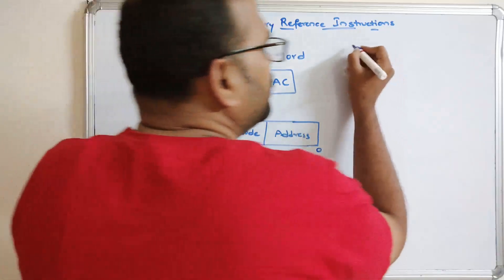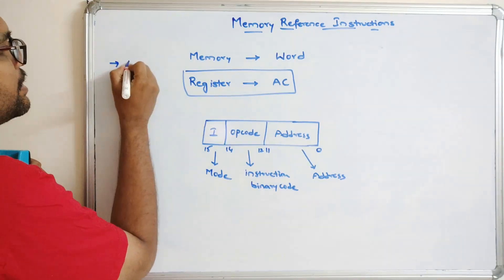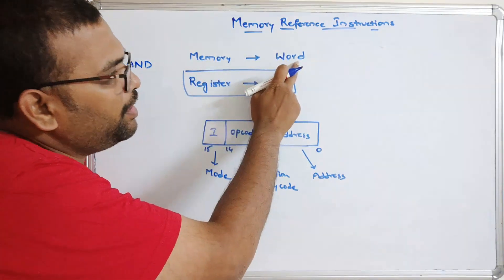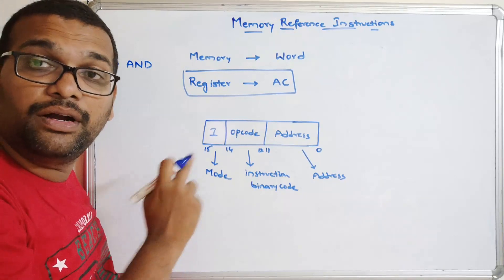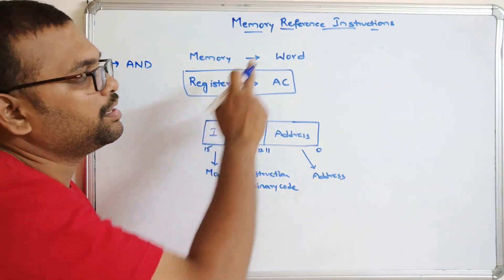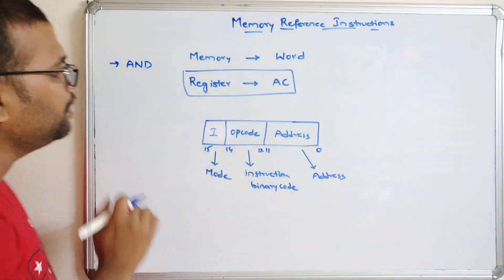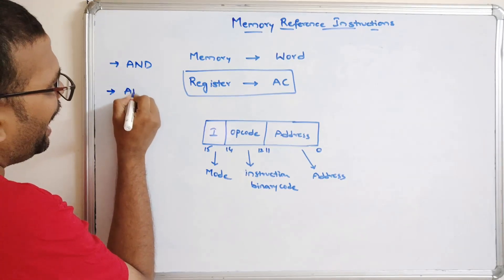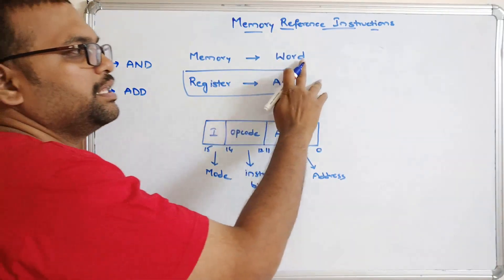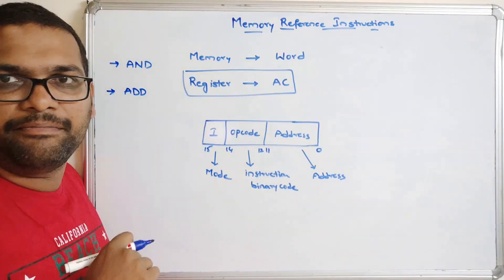Now let's look at the different instructions in the memory reference category. The first one is AND, which performs the AND operation between the word (denoted by the address) and the accumulator. The second one is ADD, which performs the addition operation between the content present in the word and the content present in the accumulator.